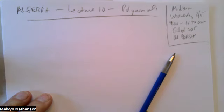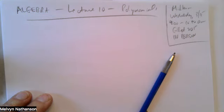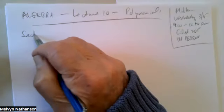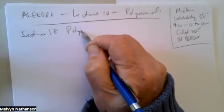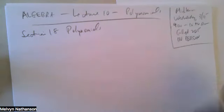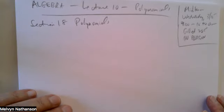We're getting towards the end of Chapter 7, and what we're up to is Section 1.8 on polynomials. Polynomials are things that you know very well from pre-calculus and calculus.